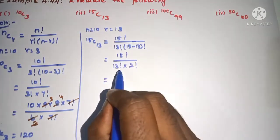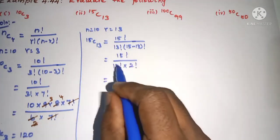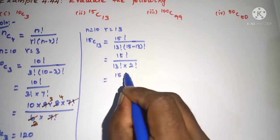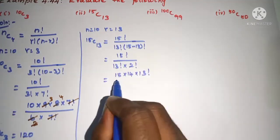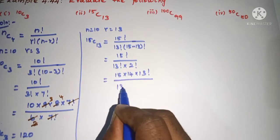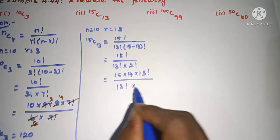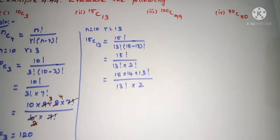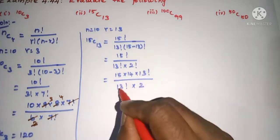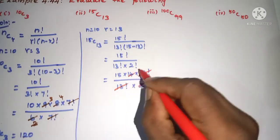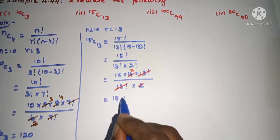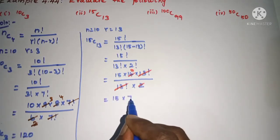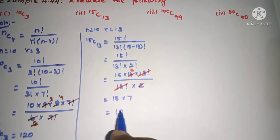Now, 15 factorial is equal to 15 into 14 into 13 factorial, divided by 13 factorial into 2 factorial, which is 2. These 2's are cancelled. So 15 into 7 gives us 105.